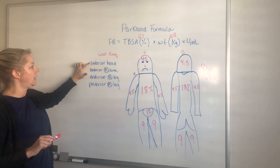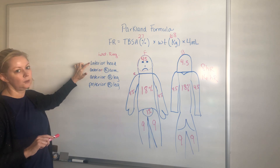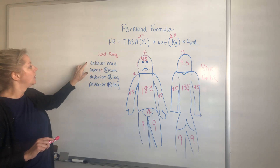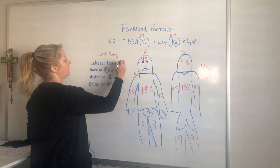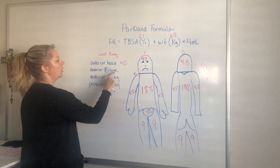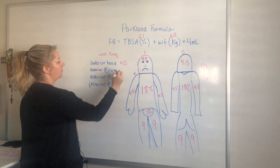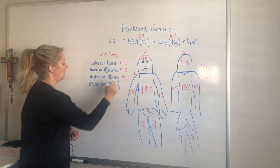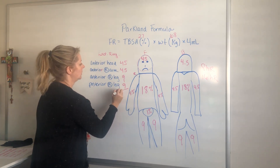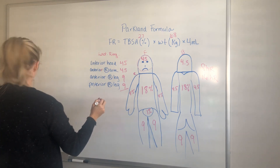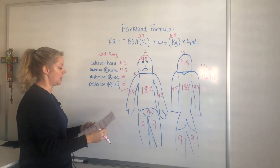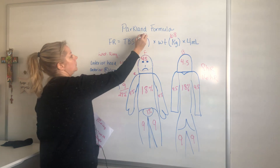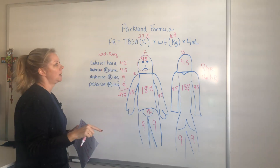This patient has burns on the anterior head — I want to figure out the total body surface area percentage to determine how much fluid to give over 24 hours. Anterior head is 4.5%, anterior right arm is 4.5%, anterior right leg is 9%, and posterior right leg is 9%. Adding those up gives us 27%.